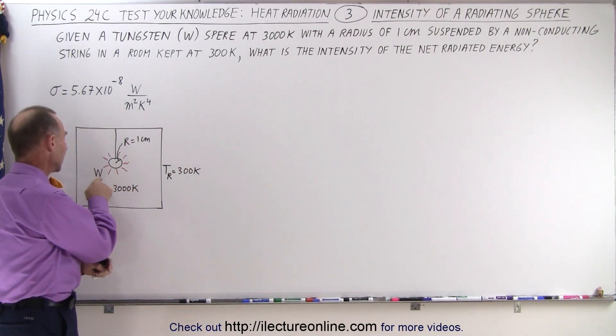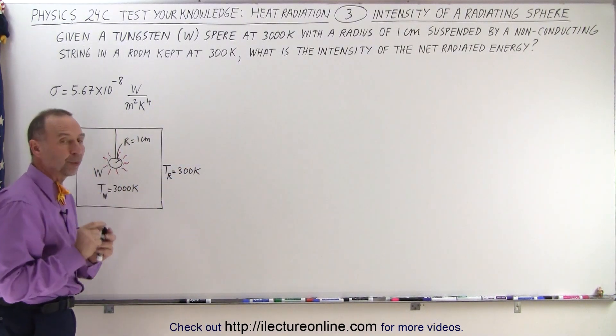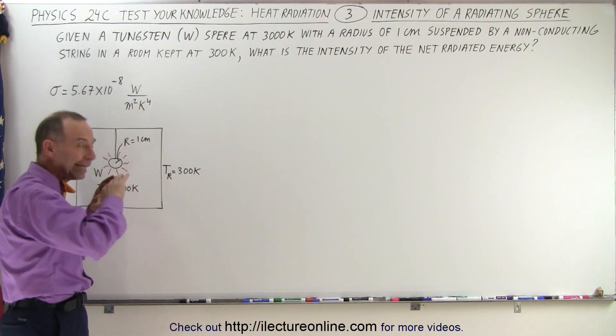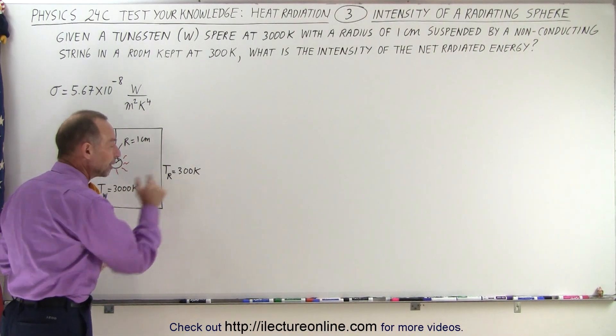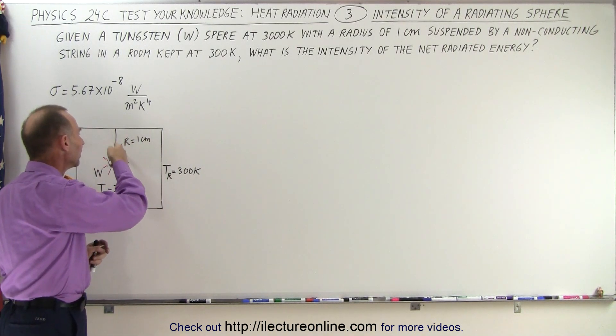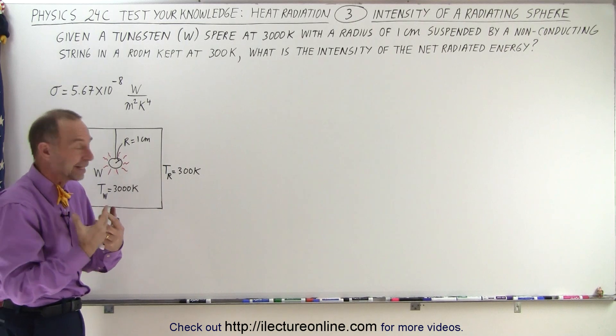Here we are, a sphere made out of tungsten with a radius of 1 centimeter, kept at a temperature of 3000 Kelvin inside a room which is at 300 Kelvin, which is about room temperature, and suspended from the ceiling by a string that does not conduct any heat.